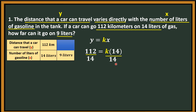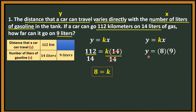Divide both sides by 14 — you can cancel 14, and on the right side, K remains. Then 112 divided by 14 is 8. So this is now the constant. Since we now have the constant, we can solve for the distance for 9 liters. Using the original equation Y = KX, where K is 8 and X is 9, by substitution we have Y = 8 times 9. And 8 times 9 is 72. Therefore, the distance that a car can travel for 9 liters is 72 kilometers.